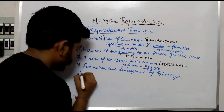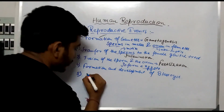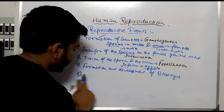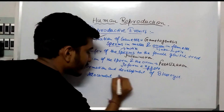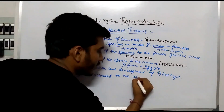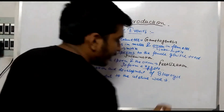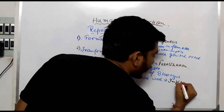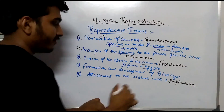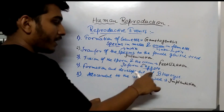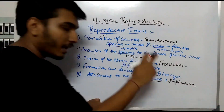Fifth point: the blastocyst attaches to the uterine wall. This attachment to the uterine wall is known as implantation. So first a zygote forms, then the blastocyst formation occurs, and then this blastocyst attaches to the uterine wall — that is implantation.